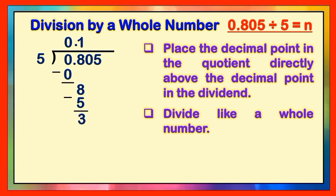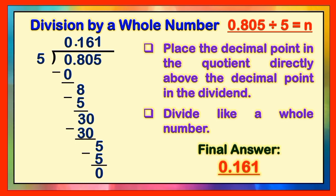The next thing is to bring down 0, so we have 30. 30 divided by 5 equals 6. 6 times 5 equals 30. Get the difference — we will get 0. Then bring down the last digit in our dividend, which is 5. 5 divided by 5 gives us 1. 1 times 5 equals 5. Get the difference — we will get 0. Therefore, the final answer is 0 and 161 thousandths.